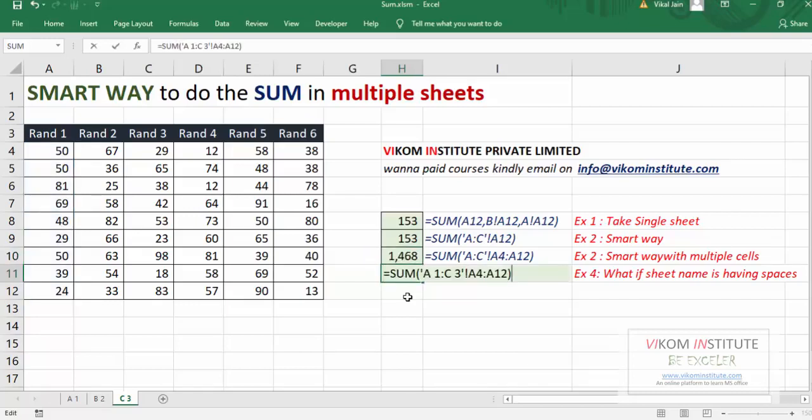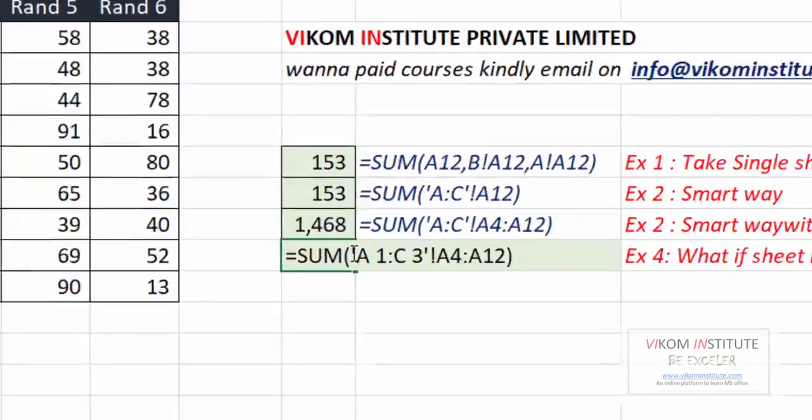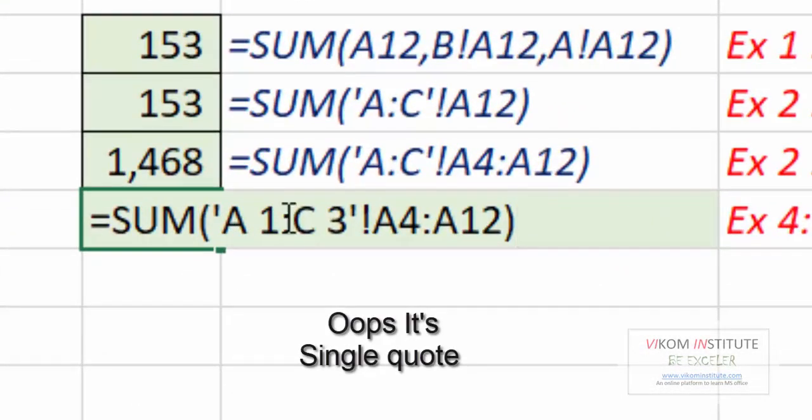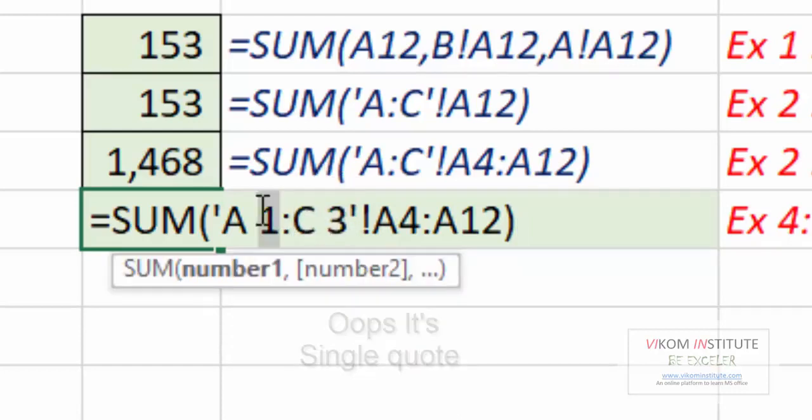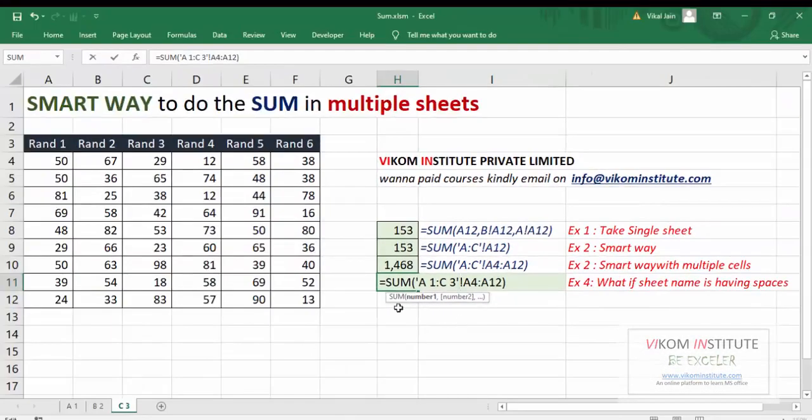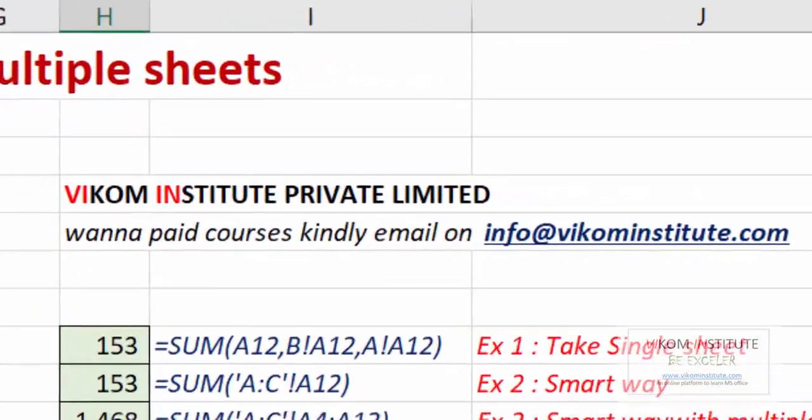See what has it done - it has an apostrophe over here. So A space 1, column C space 3, this is the last sheet, this is the first sheet, and this one is extra put by the Excel. So if your sheet is having spaces, you can use this formula.